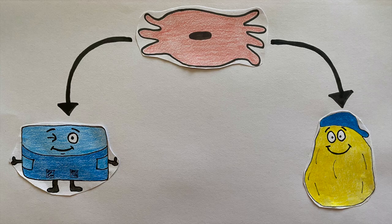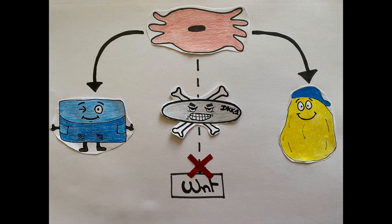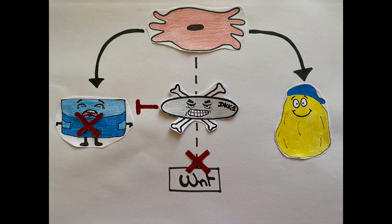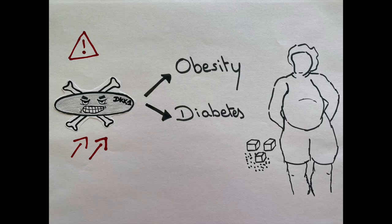One of the key regulators that defines mesenchymal stem cell differentiation into adipocytes or osteoblasts is Wnt signaling. DKK1 is a potent inhibitor of Wnt signaling and thereby promotes adipogenesis and blocks osteogenesis. In addition, the expression of DKK1 is increased in obesity and diabetes.